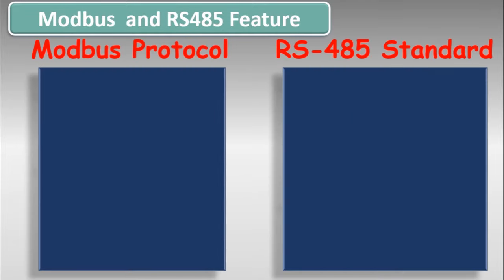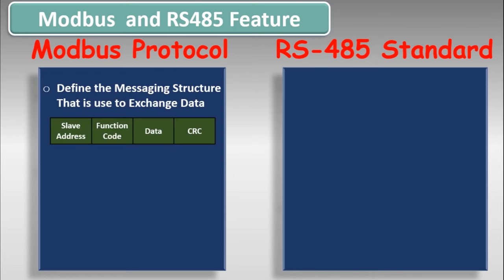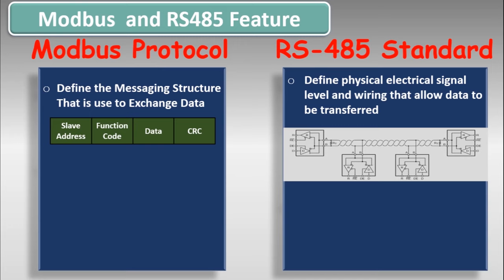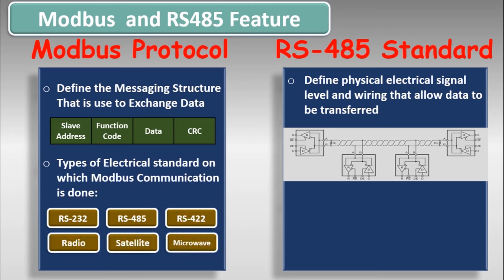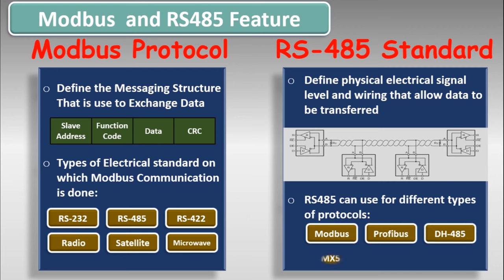Before going to the communication parameters, let me summarize the discussion on Modbus protocol and RS485. Modbus protocol is a messaging structure used to exchange data between two devices. RS485 defines the physical electrical characteristics of the driver and receiver, including wiring, that allow data to be transferred. Modbus protocol is not only tied to RS485 — it can run on RS232, RS422, radio, satellite, microwave, TCP/IP, and others. Similarly, RS485 can be used with other protocols such as Profibus, DS485, Optomux, DMX512, DCC, etc.